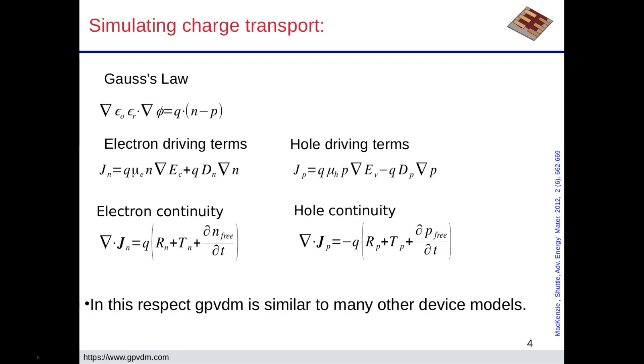So very quick theoretical overview. I'm not going to go into all the details at all, but these are effectively the drift diffusion equations. So we've got Gauss's law, electron hole driving equations, so electrons flow as a function of both potential and gradient, and the same with holes. Then you've got the hole, electron continuity equations. It's got recombination, trapping, and sort of terms in there effectively. And with respect to this, the model's very similar to many other device models, so it's bog standard in that regard.